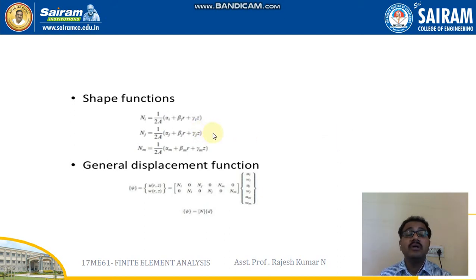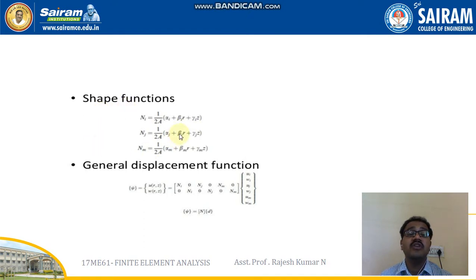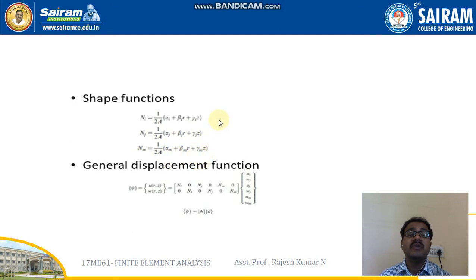Generally, we know for any three-noded triangle element what the shape function equations are with respect to Cartesian coordinates — already discussed in module 2. I will be adopting the shape function equations as derived for the three-noded triangle element. So for three nodes — node i, node j, node m — I will denote them as Ni, Nj, Nm. The equations are: for node i, it is (1/2A)(αi + βi·r + γi·z); for Nj, it is (1/2A)(αj + βj·r + γj·z); and for Nm, it is (1/2A)(αm + βm·r + γm·z).